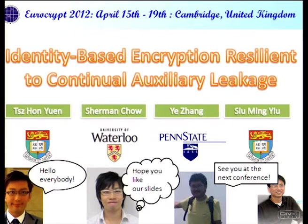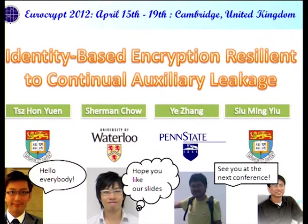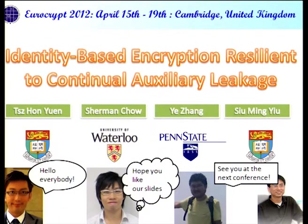Our next talk will be about Identity-Based Encryption Resilient to Continual Auxiliary Leakage by Chi Hon-Yen, Sherman Chao, Ye Zhang, and Shu Min-Yu. Chi will give the talk. Today I'll present about Identity-Based Encryption Resilient to Continual Auxiliary Leakage. This is a joint work with Sherman Chao, who is also here today, and Ye Zhang and Shu Min-Yu.